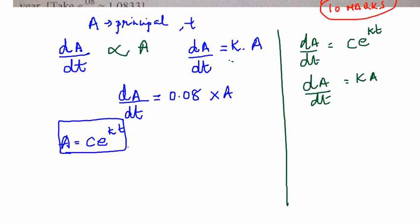So I'm bringing all the A's to one side and k dt. So if you integrate on both sides it becomes log A is equal to kt plus log c, where c is just a constant.